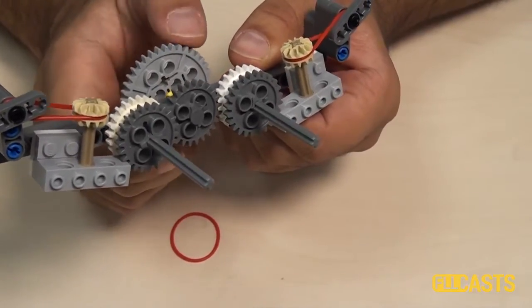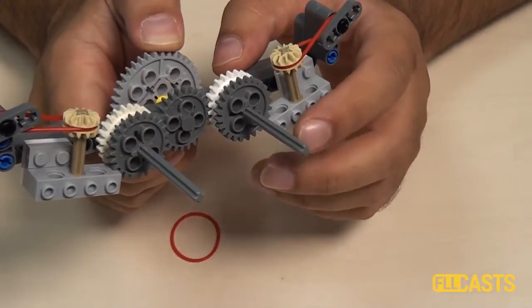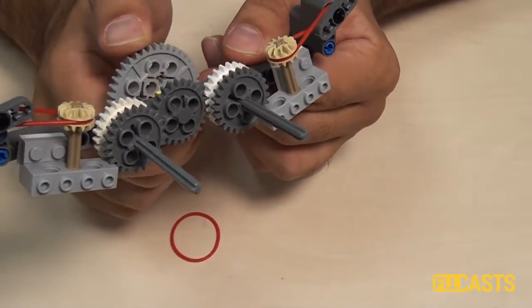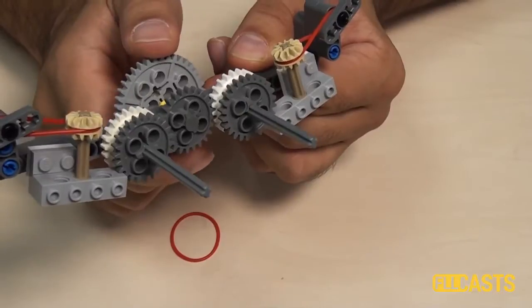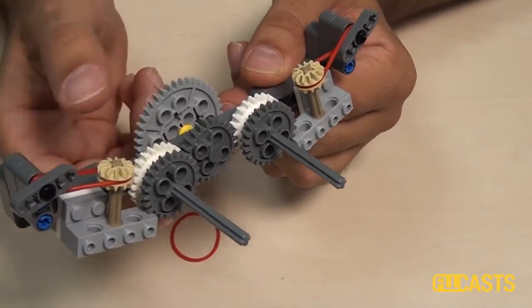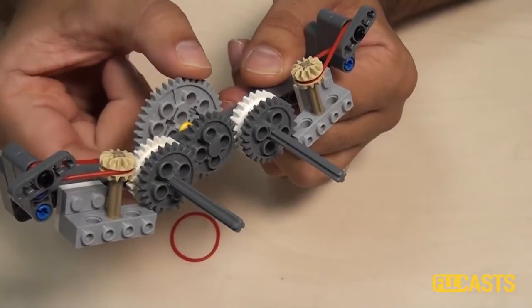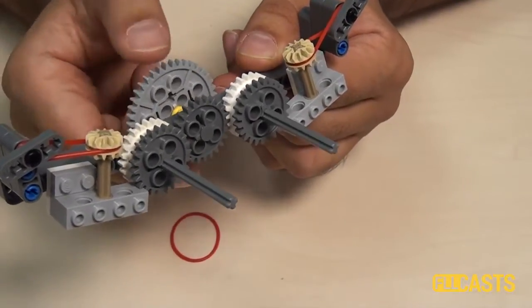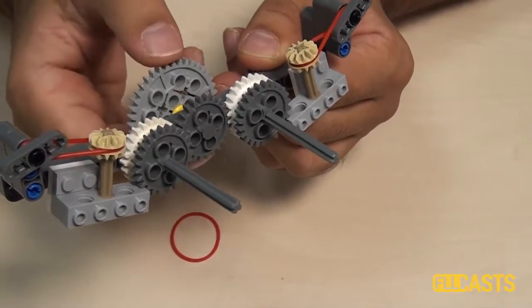As you can see, currently only my left axle rotates. Now if I turn the gear wheel in the opposite direction, only the other axle rotates.